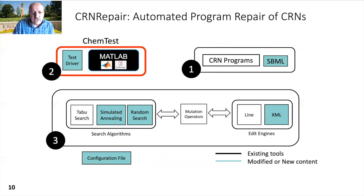ChemTest originally used a different input format. Since we now communicate among different frameworks, we modified it so that it reads and processes SBML files. Upon receiving a CRN, ChemTest returns its fitness, which is the number of failing simulations.